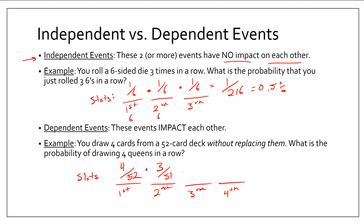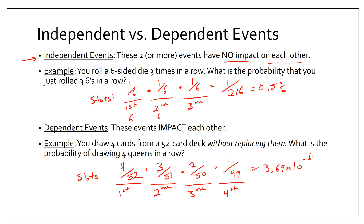From here the pattern continues: now there are only two queens left out of 50 total cards, and then only one queen left out of 49 cards. It actually gets harder and harder to draw a queen because there are fewer and fewer queens in the deck. Multiplying top times top gives 24, and bottom times bottom gives a large number. Twenty-four divided by that number is about 3.69 times 10 to the negative 6 — that's 0.0000369. That's your chance of drawing four queens in a row — incredibly, incredibly unlikely to happen.